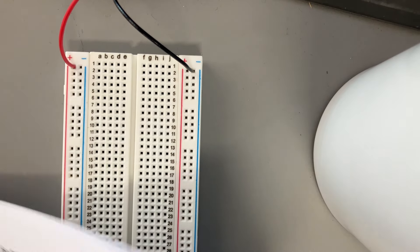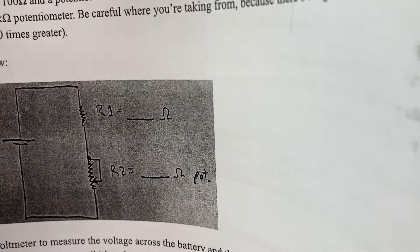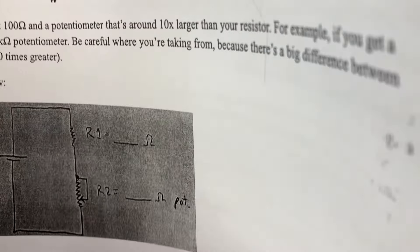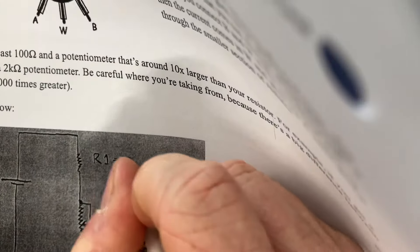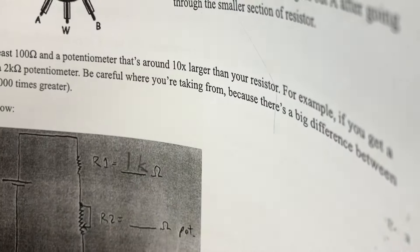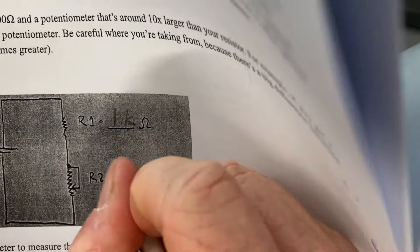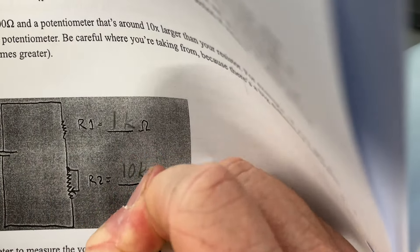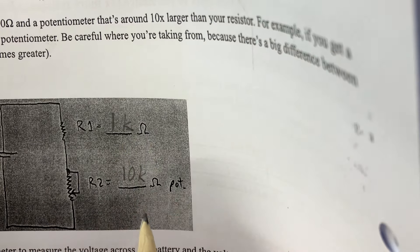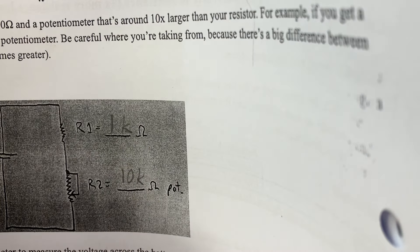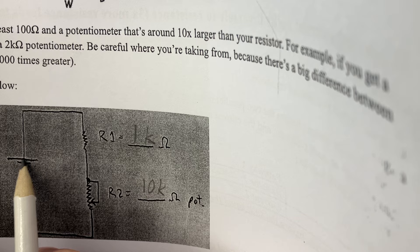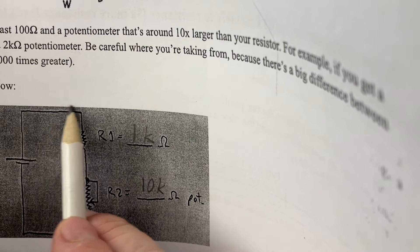Then, as I look at my circuit diagram right here, I have chosen a 1,000-ohm resistor, so that's 1K, and a 10,000-ohm potentiometer. I can see on my circuit I'm going to go from the positive side to my resistor.